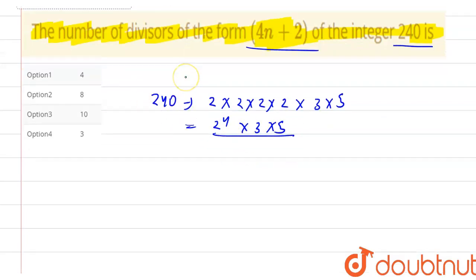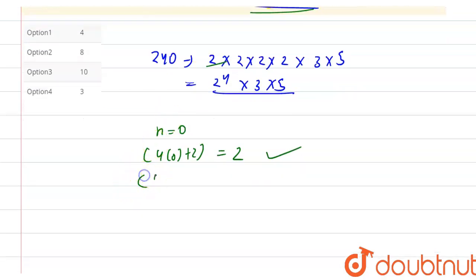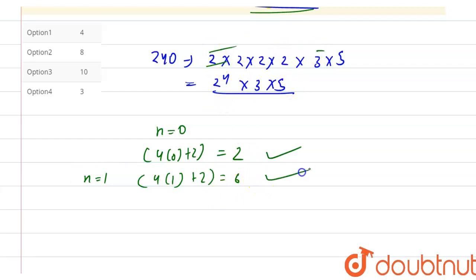Now let's see which factors fit the 4n plus 2 form. If I take n equal to 0, then 4(0) plus 2 equals 2. So 2 is a factor of 240 — that is one solution. If I put n equal to 1, then 4(1) plus 2 equals 6. Since 2 × 3 = 6, it is also a factor — that is our second solution.